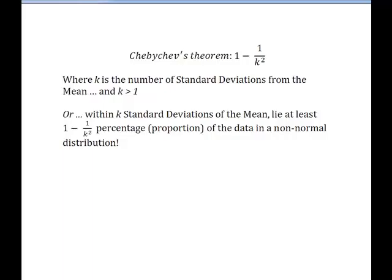It doesn't have to be a whole number, but it has to be at least 1 or larger. And as long as k is larger than 1, what we know is that within k — that unknown number of standard deviations from the mean — we will have at least 1 minus 1 over k squared percentage or proportion of the data in a non-normal distribution. It sounds very official and very technical, but the mechanics of it are much easier than pronouncing his name or looking at this formula. So let's see how it works.